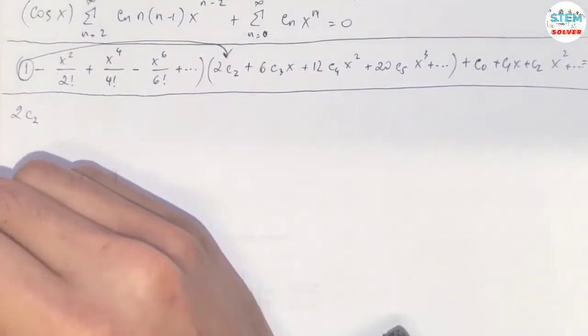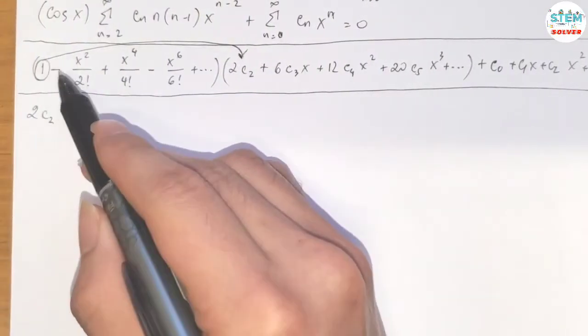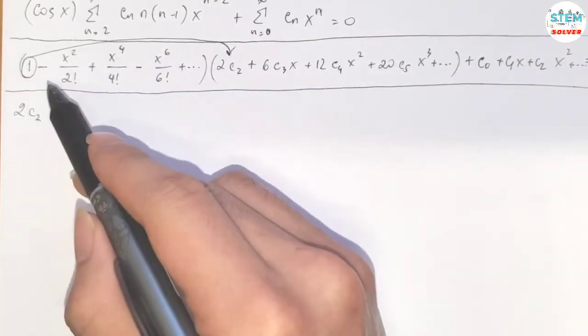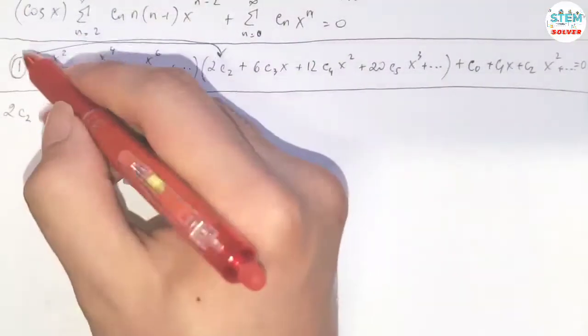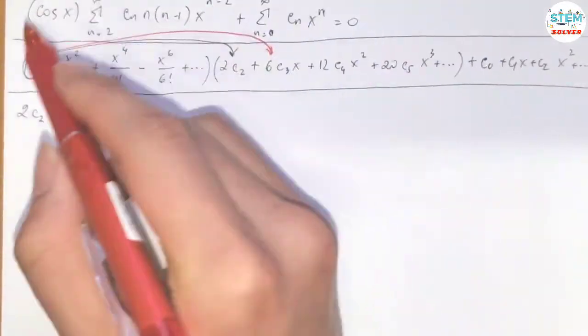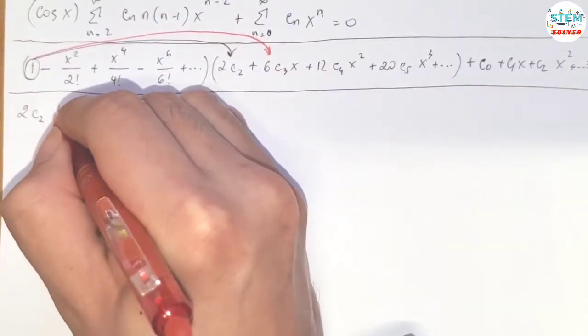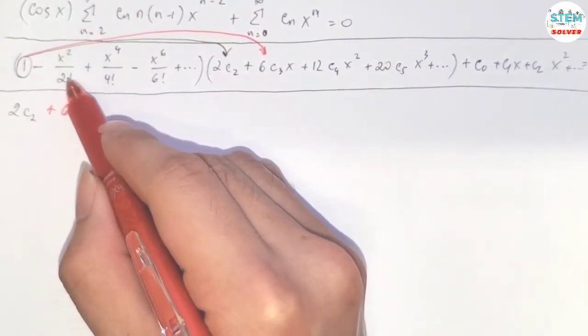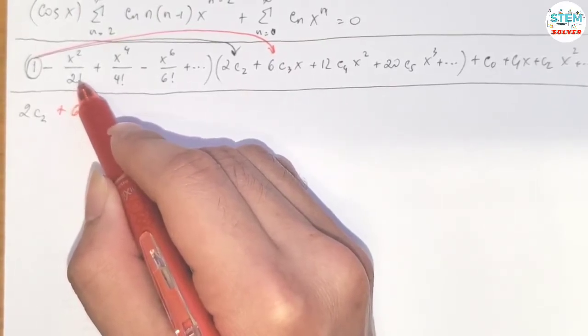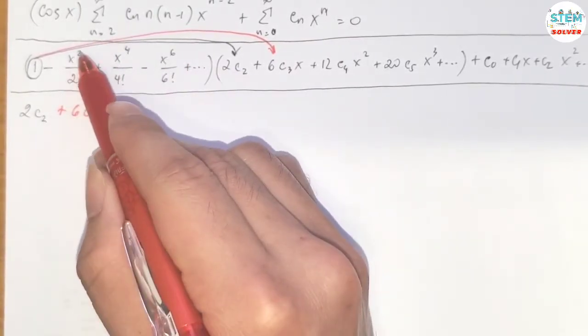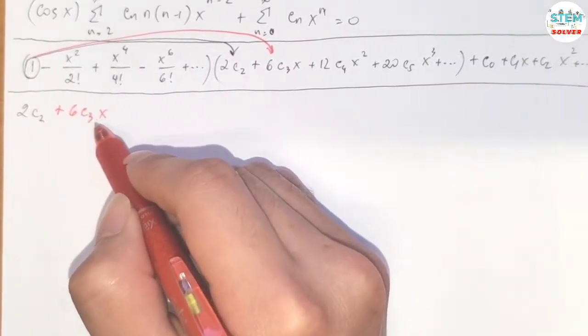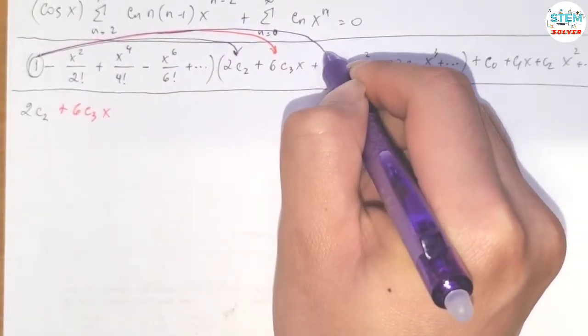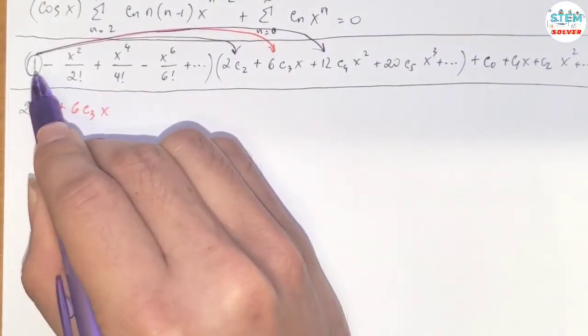Distribute this into this one. So I have 2c_2. I need to ask myself that if I were about to distribute this one into this one, would I get the constant? The answer is no, so I'm done with the constant. Now let's move to the next one. So distribute this, I have 6c_3 x. Keep circling back to this and then move to the next one. If I distribute this, would I get an x term? The answer is no because we have x squared.